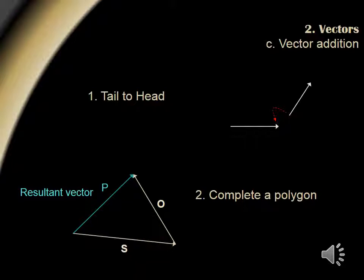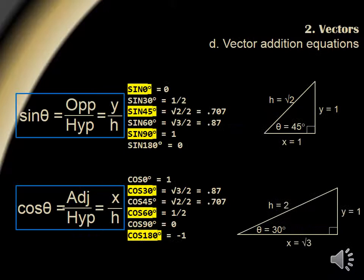When adding vectors, we place the tail of the second vector to the head of the first vector without changing the orientation of those vectors. It doesn't matter whether we take the tail of o to the head of s or whether we take the tail of s and bring it to the head of o. The resultant vector p always results.